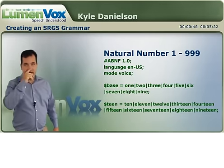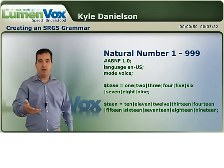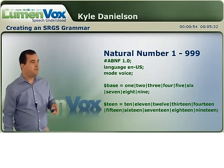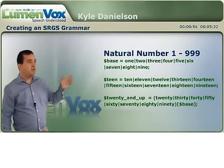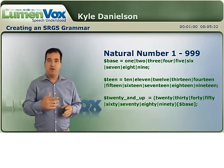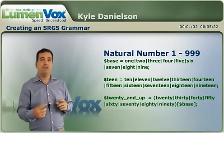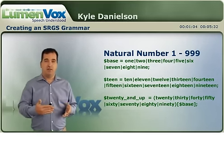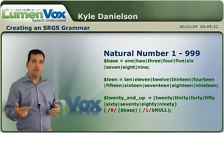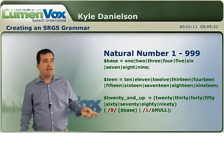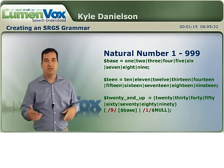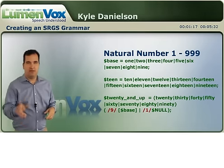Then we're going to have our teens rule, because someone might say 12, 11, so on and so forth. Then we'll produce our 20-and-up rule. This might be 20 or 30 or 40 or 50, and we'll actually put an optional base on at the end, which will allow for people to say 21. I can use weights to tell the engine what to expect, because 9 times out of 10, someone's going to say 21 versus just say 20.